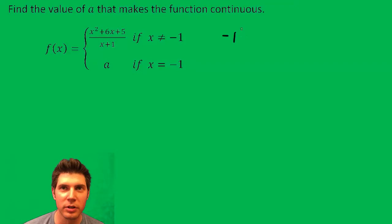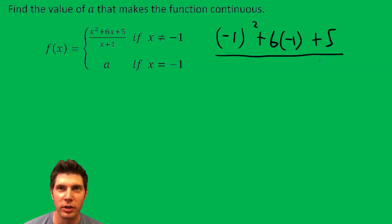Negative one squared plus six times negative one plus five over negative one plus one. One minus six plus five over negative one plus one.